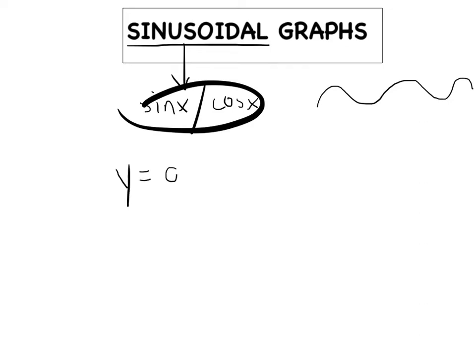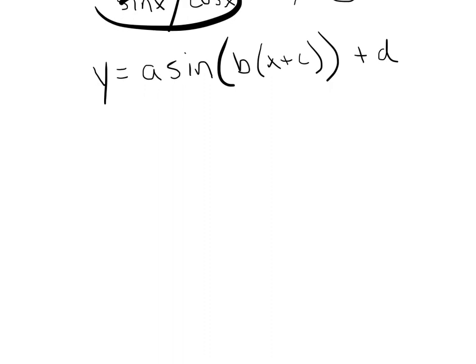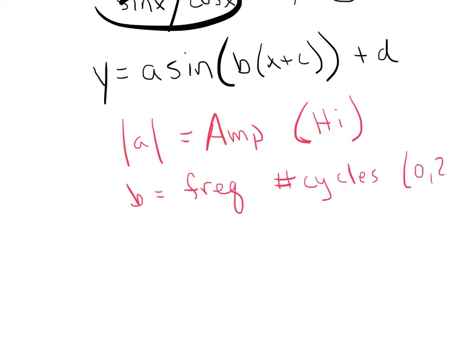Consider the general form here: y = a sin(b(x+c)) + d. What do each of these letters stand for? The absolute value of A represents the amplitude of your graph. That's how high or how low above the midline you reach or dip. B represents the frequency, that is the number of cycles you'll see between 0 and 2π, our standard interval. Now 2π divided by B is the period of the graph, and that's the number of radians it takes to complete one of those cycles.